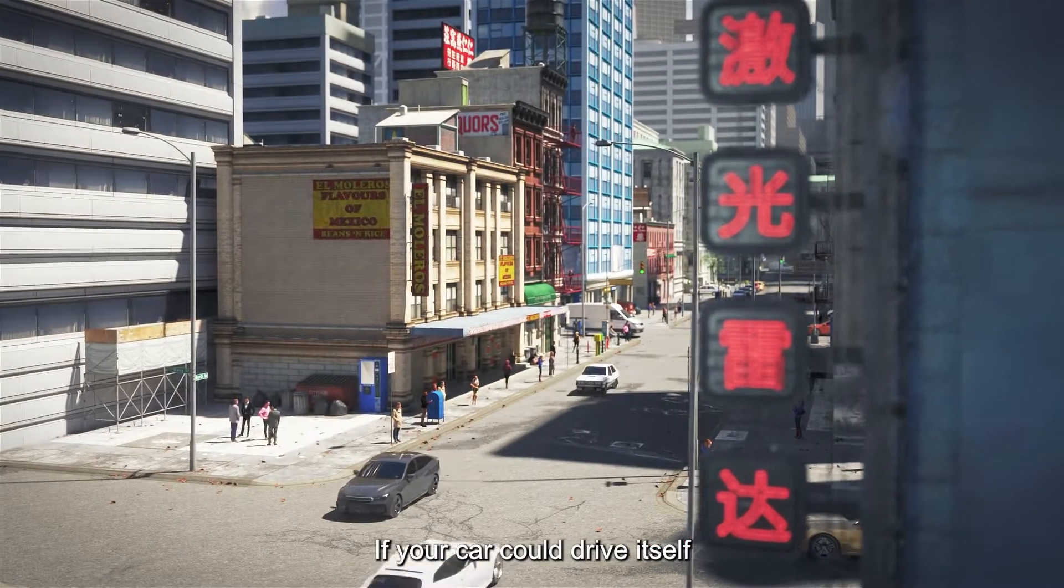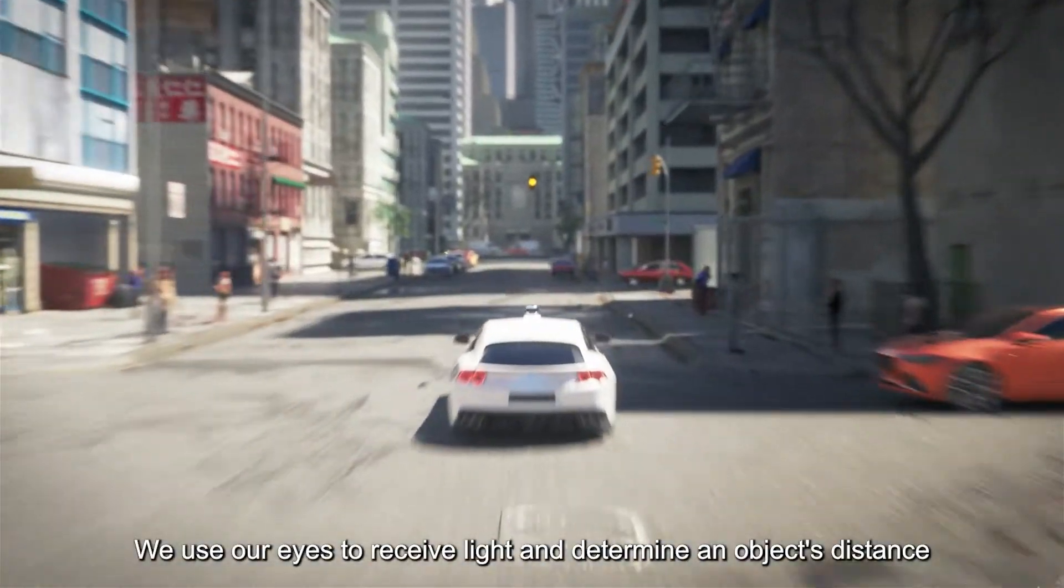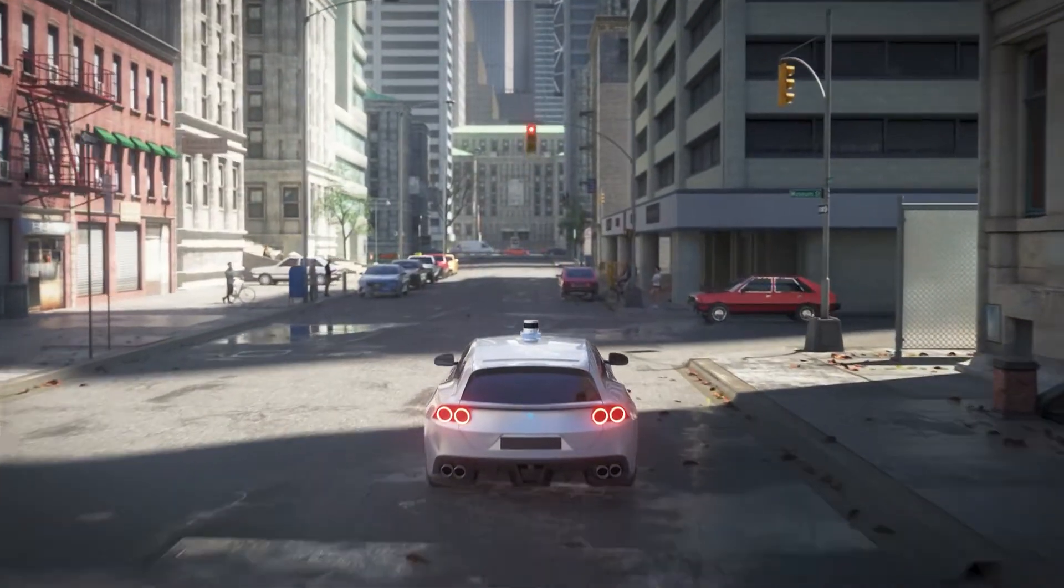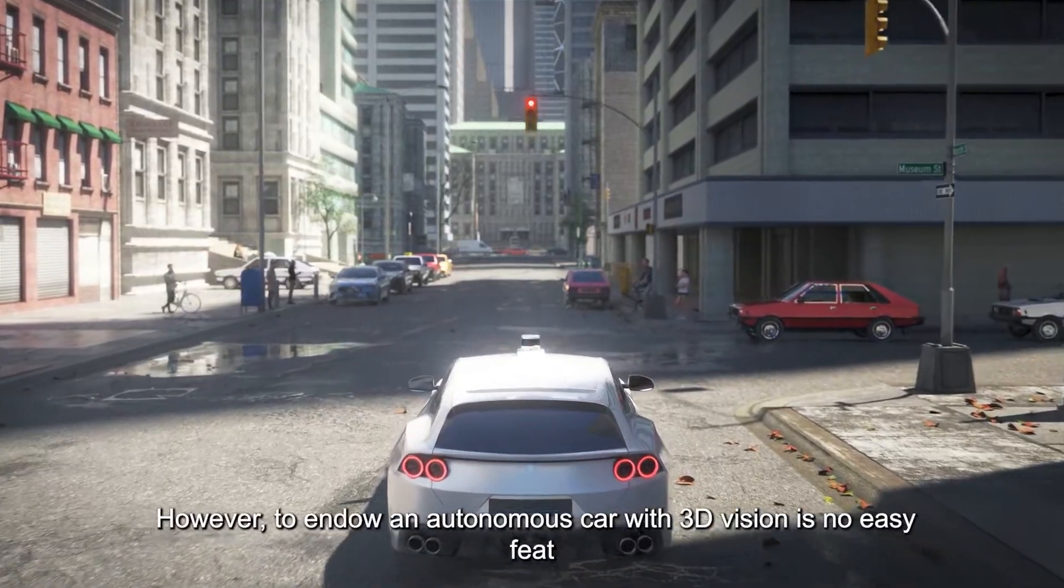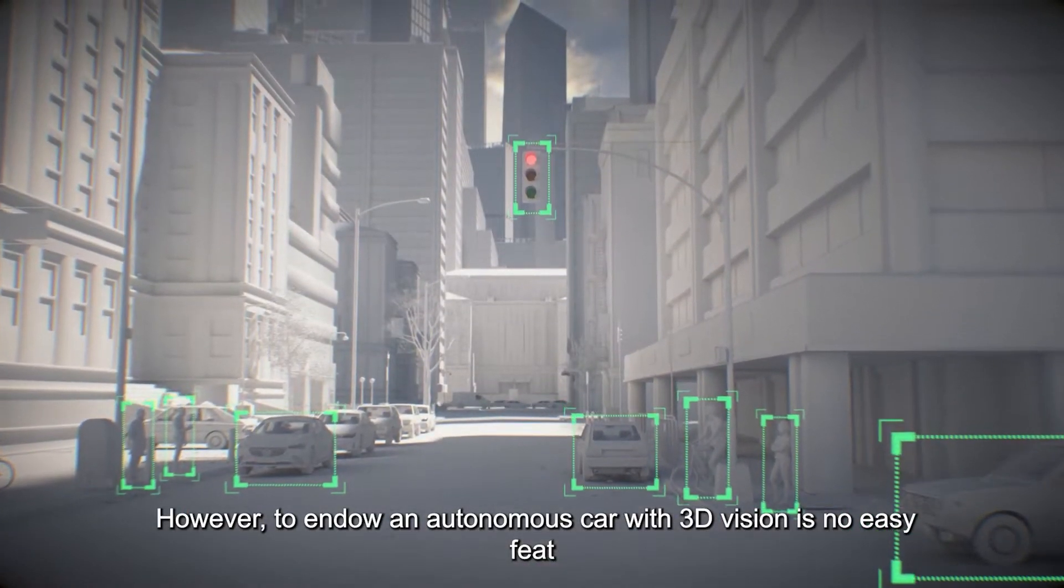If your car could drive itself, how would it see the world around it? We use our eyes to receive light and determine an object's distance, size, and direction. However, to endow an autonomous car with 3D vision is no easy feat.